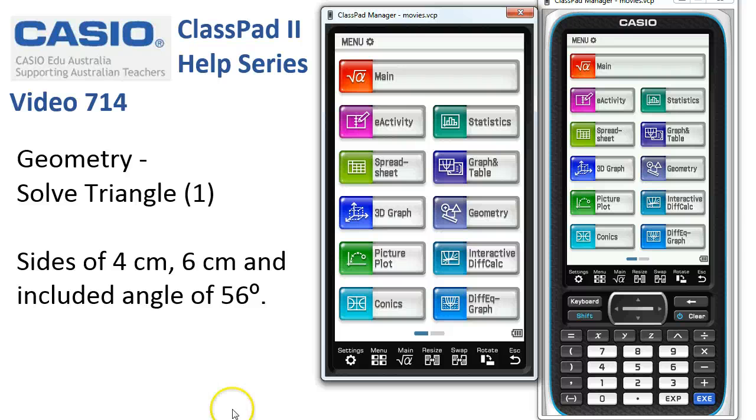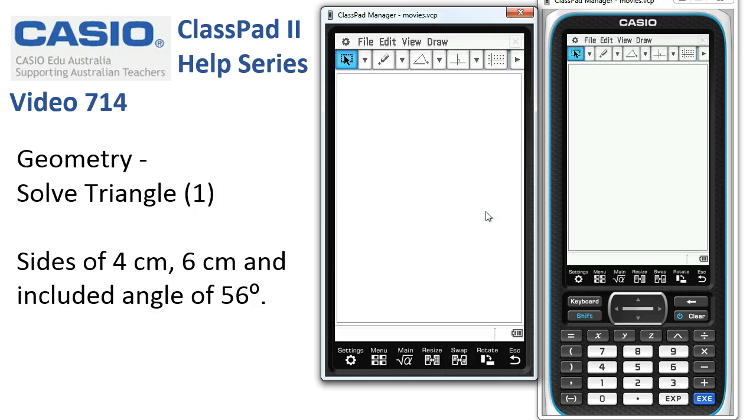Geometry: Solving a Triangle where the triangle has sides of 4cm, 6cm and an included angle of 56 degrees. We'll open up the Geometry app and tap File New.